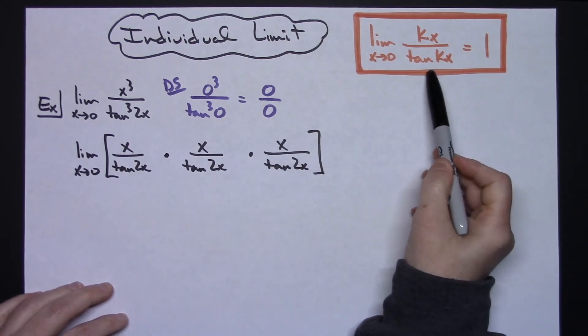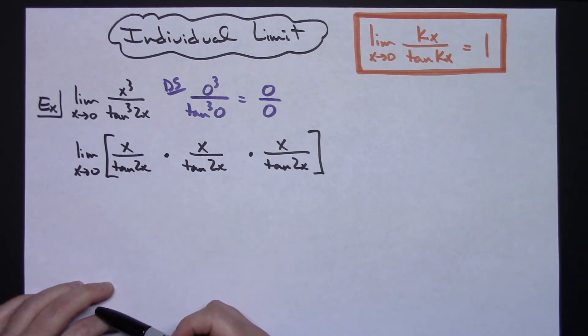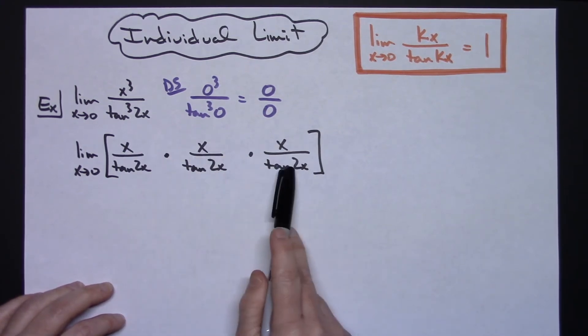Now looking at this property over here, I'm really close. I have a 2x here but I have an x in the top. I need twos in the top to be able to say each one of these limits are 1.